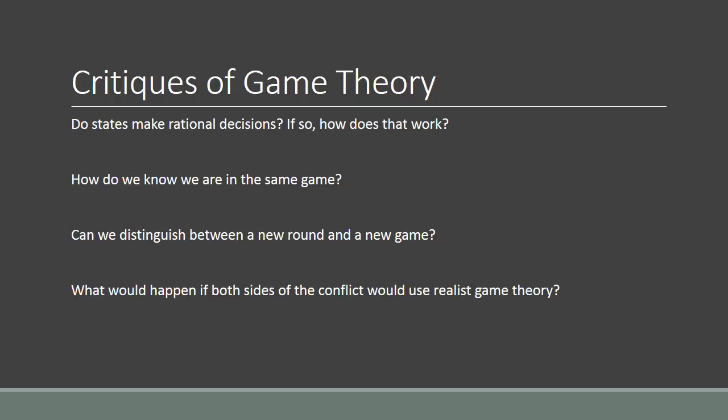The final set of critiques is that game theory may be a very predictive theory that can be very dangerous to use in policy advice — which is actually how it has been used, particularly in the case of the United States and the arms race. If both sides of a conflict use the Prisoner's Dilemma for formulating policy, you have a model of behavior that actually becomes a self-fulfilling prophecy, pushing states towards armament and becoming part of the political game instead of just a tool for policy analysis.